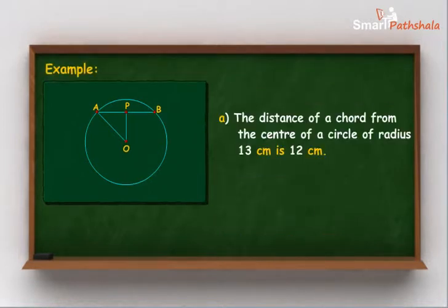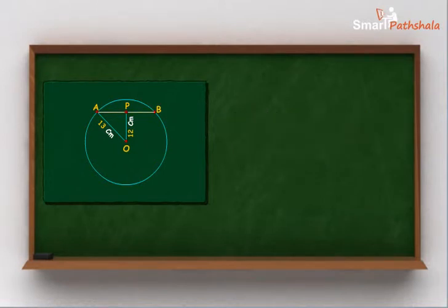Example A: The distance of a chord from the center of a circle of radius 13 cm is 12 cm. Find the length of the chord.